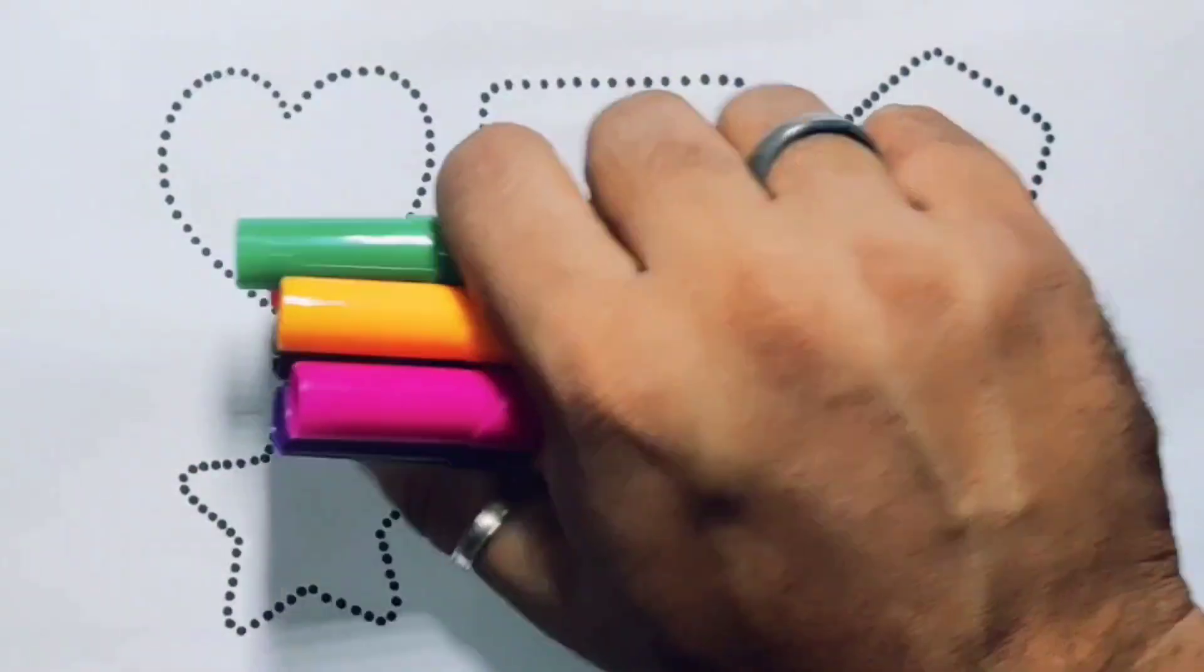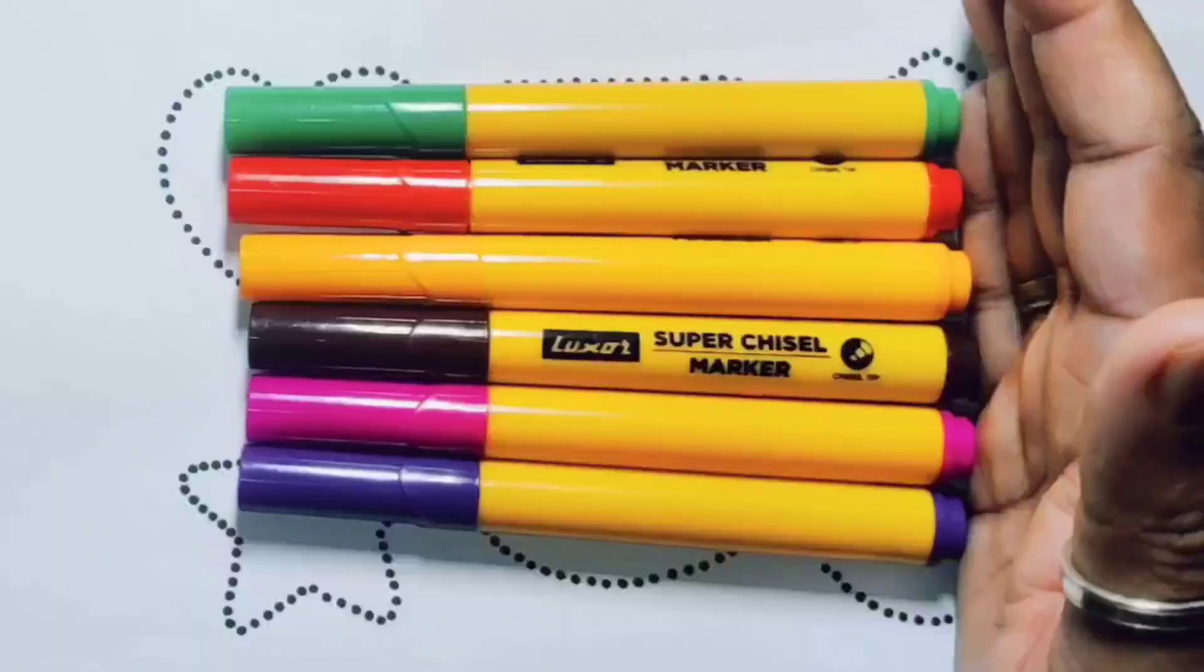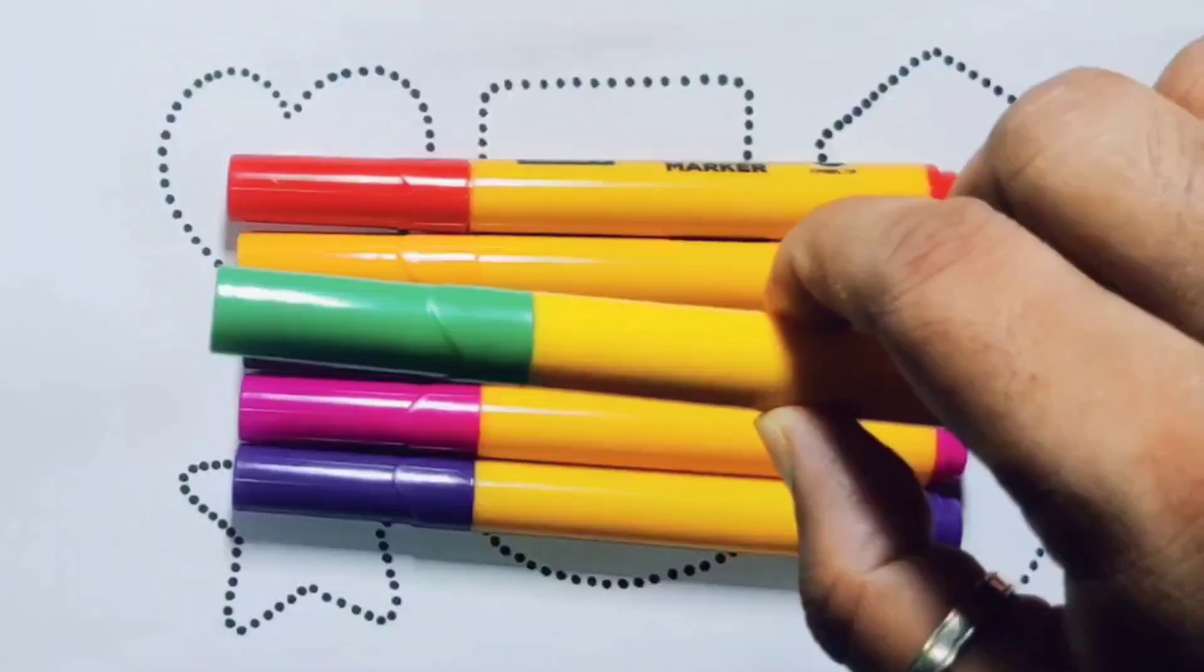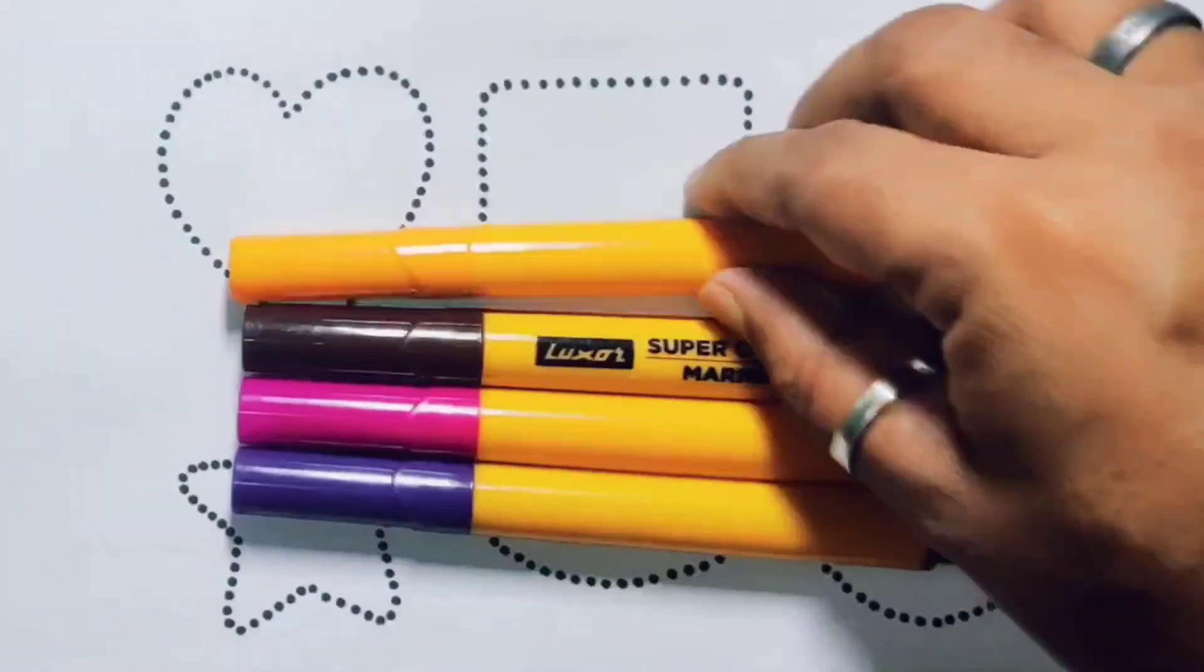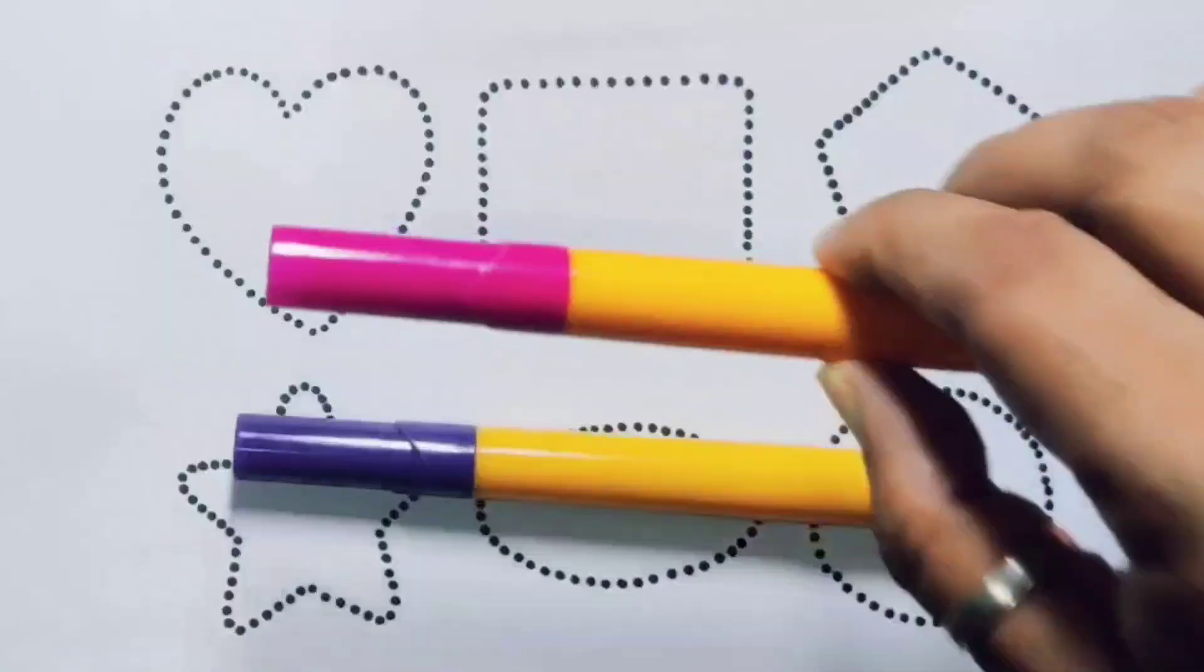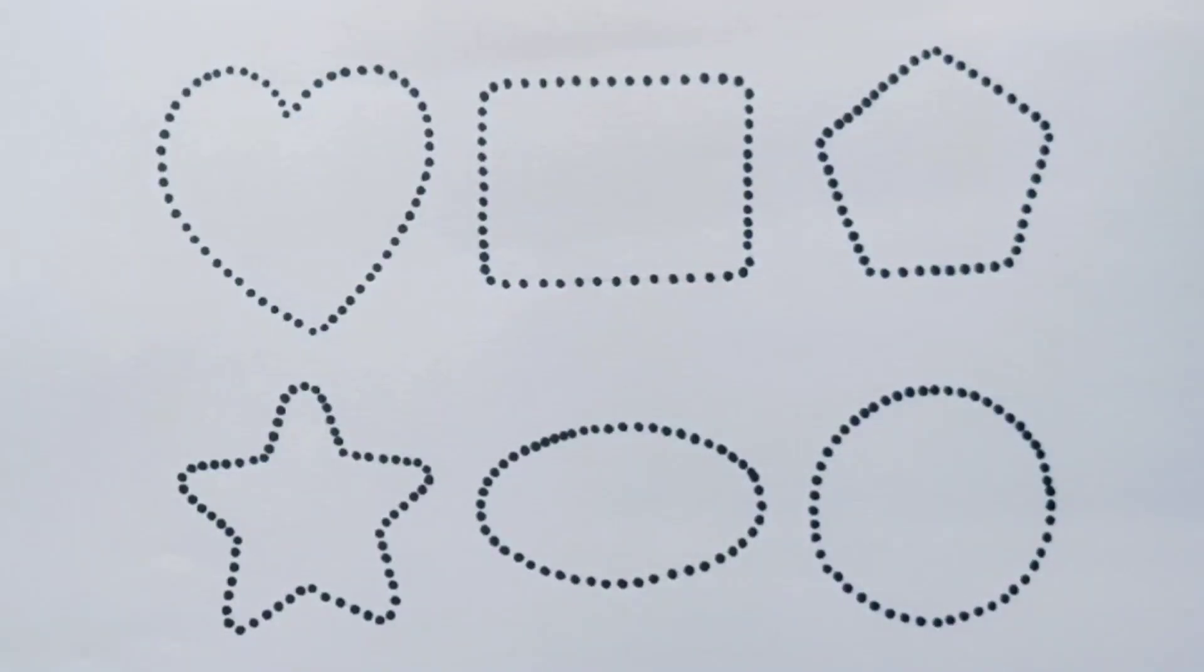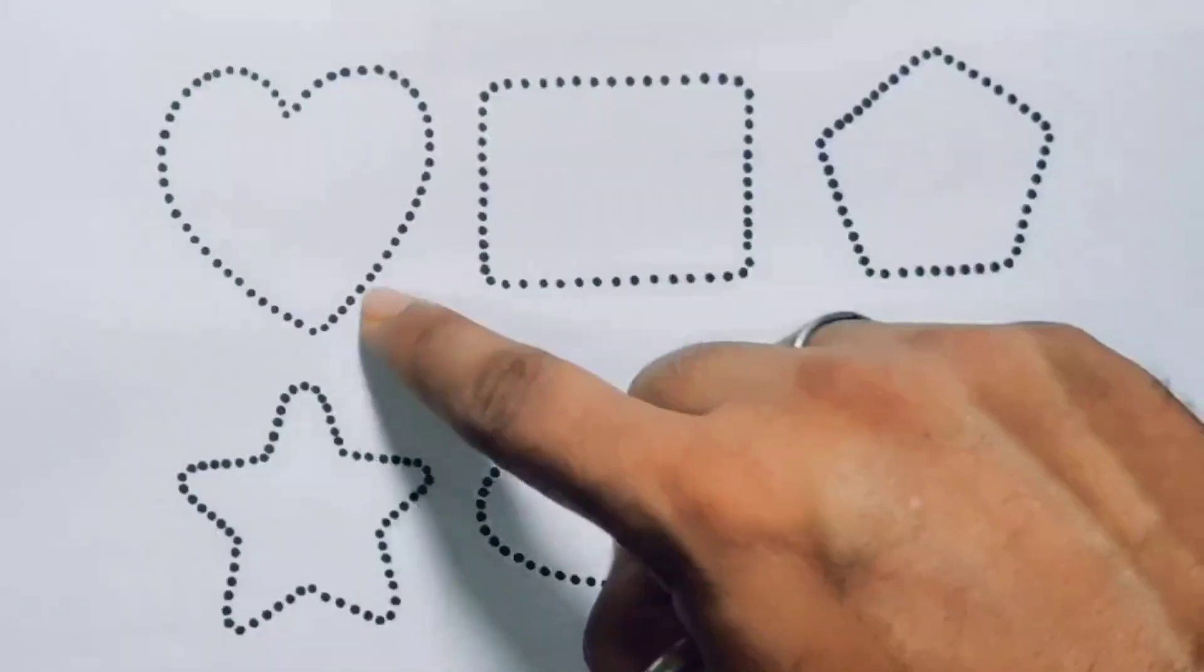Hello kids, welcome to my new video. First, we're going to learn the color names: green, red, orange, chocolate, pink, purple, and black. Now let's learn the 2D shapes: heart...